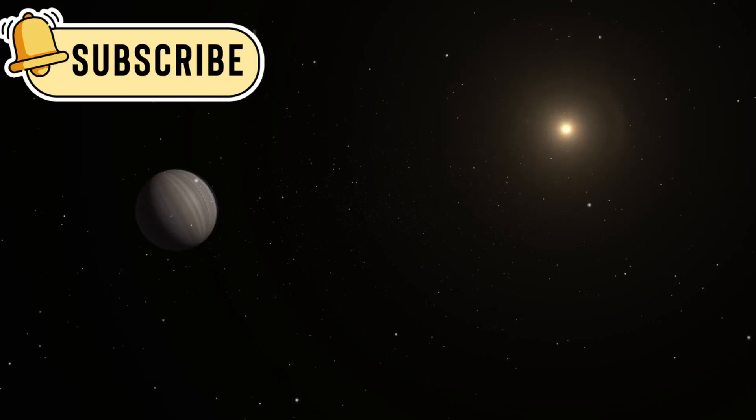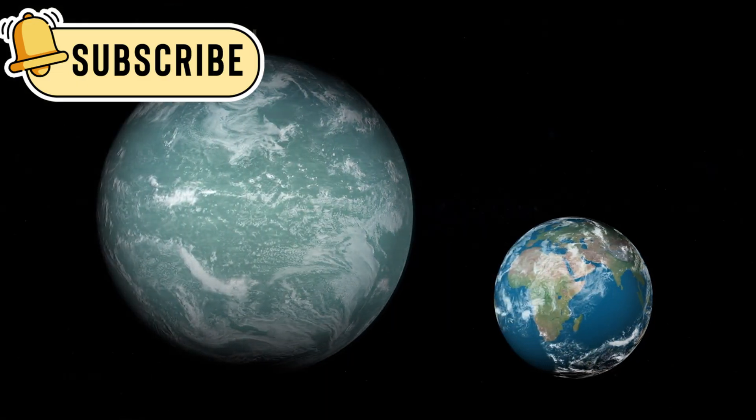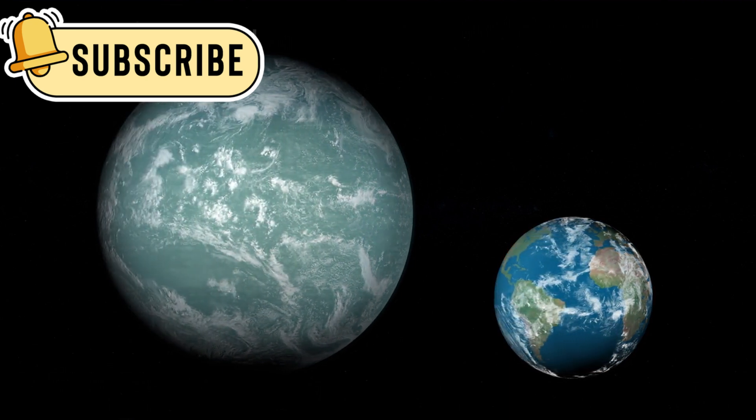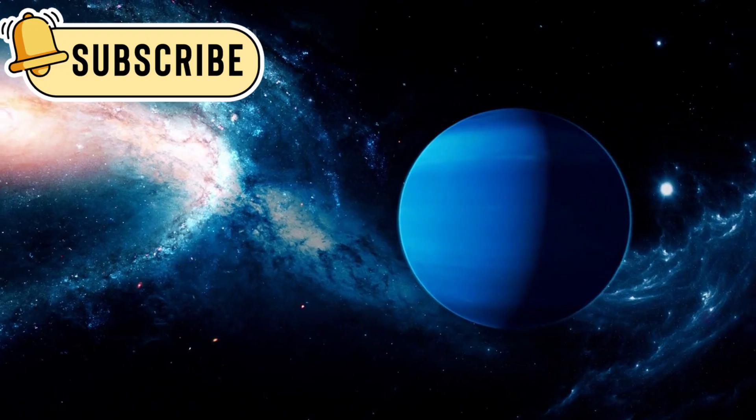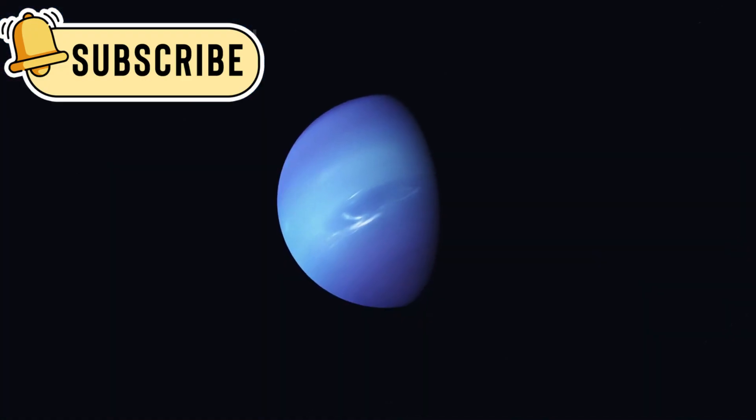A planet called K218b has caught the attention of scientists. It is much larger than Earth, about 8.6 times bigger, and is known as a sub-Neptune planet. Sub-Neptune planets are bigger than Earth but smaller than Neptune. We don't have any planets like that in our own solar system, so they're very interesting.